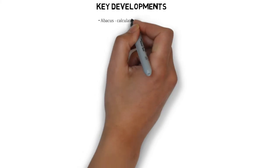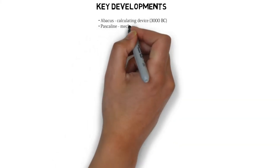Key developments. Abacus Calculating Device, 3000 BC. Pascaline Mechanical Adding Machine, 1642.